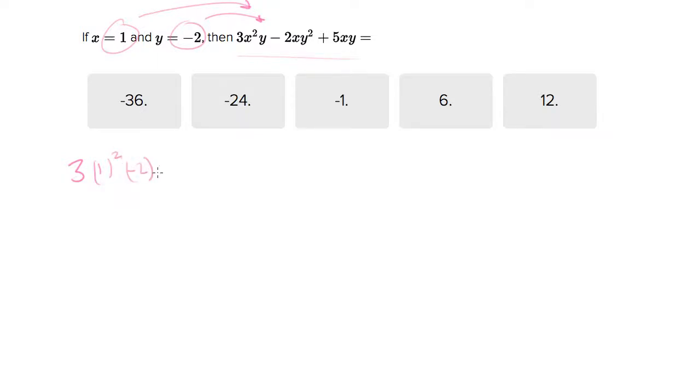Now here the big thing to not do is make paperwork mistakes, so write big and slowly and carefully and make sure that you don't mess anything up. So again I'm gonna put in 1 for x.